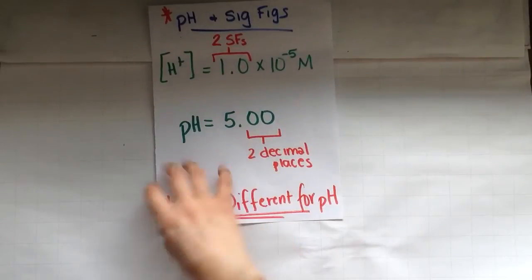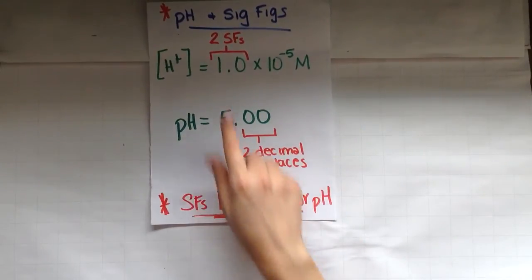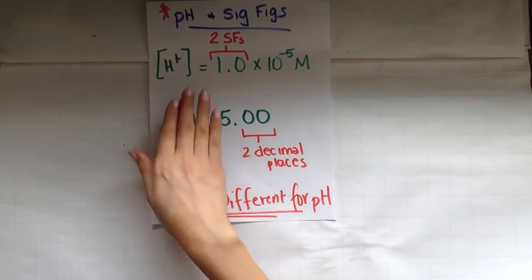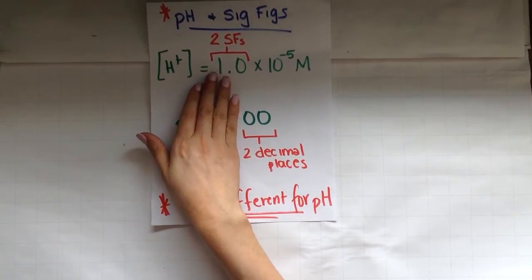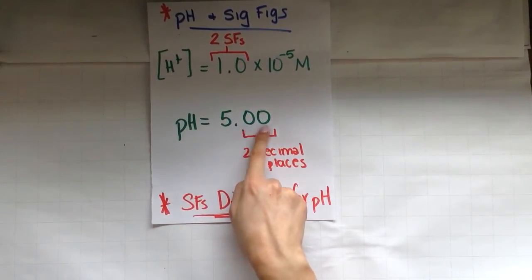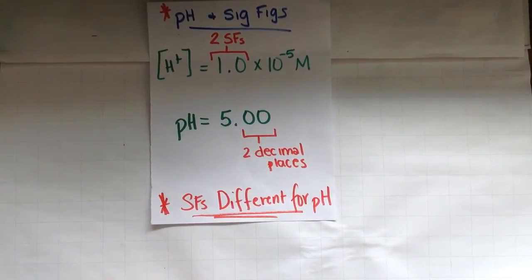So how do we do sig figs in our pH number? Our sig figs match how many decimal places we give our pH. So we don't care to look at the front number for sig figs. We still put it there. But our sig figs tells us how many decimal places we should add after.